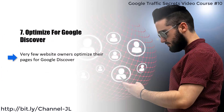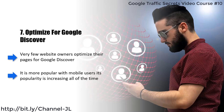Seven: optimize for Google Discover. Very few website owners optimize their pages for Google Discover. This widely used feature can bring a lot of Google traffic and it is more popular with mobile users, with its popularity increasing all of the time. Research which topics are popular and always use high quality and attractive images with your content.